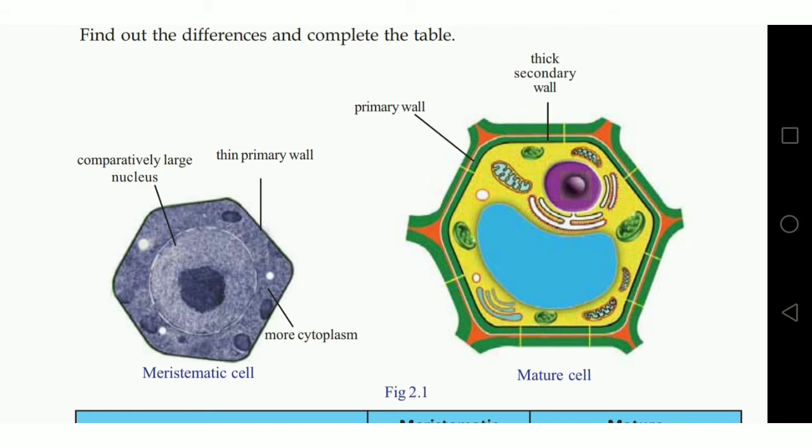More cytoplasm is seen in meristematic cell, less cytoplasm is seen in mature cell.